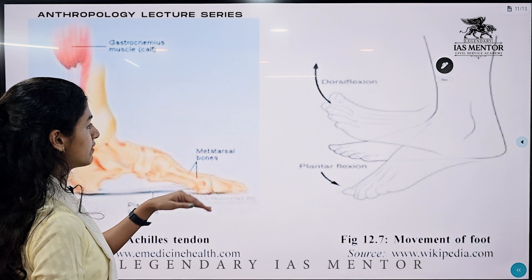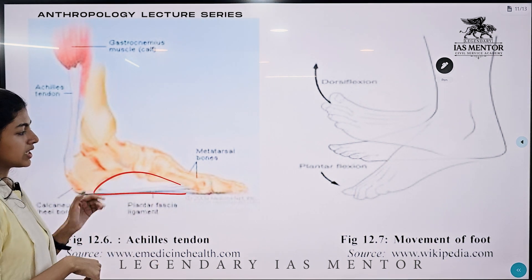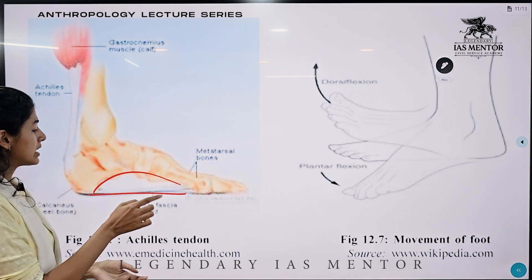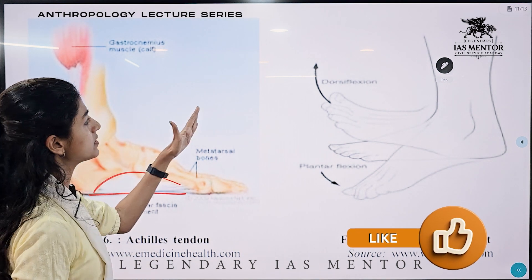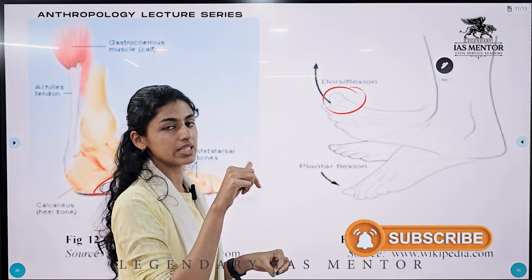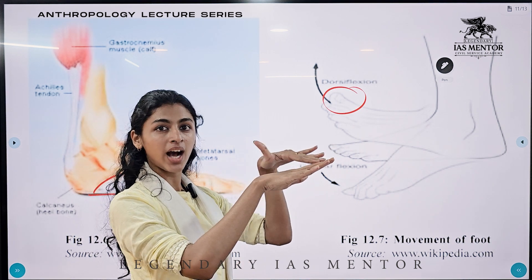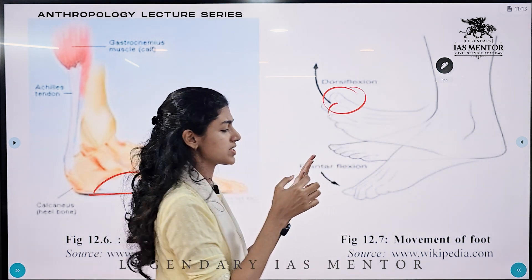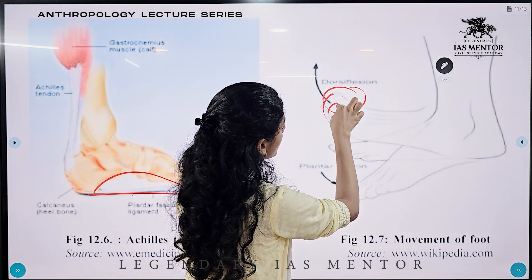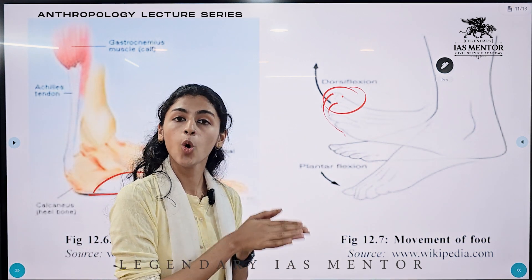Next, the evolutionary changes in the foot: humans have a plantar arc — a curvature shape — which is a unique feature of humans. Earlier in chimpanzees and other primates, the foot was flat. This plantar arc provides stability. Additionally, the hallux, or big toe, is opposable in chimpanzees and other primates, but in humans the hallux is non-opposable and parallel to the other phalanges (the bones in the fingers and toes). This is also one of the evolutionary changes in the humanization process.